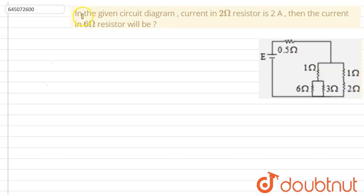Hello everyone, we have been given a question. The question says, in the given circuit diagram, current in 2 ohm resistor is 2 ampere, then the current in 6 ohm resistor will be.